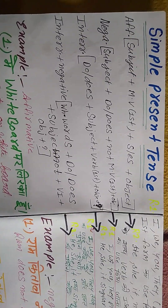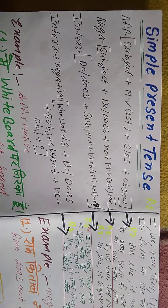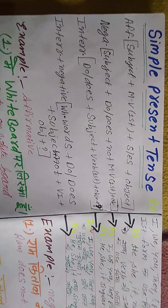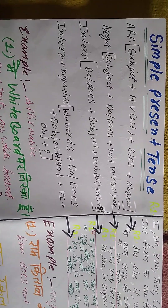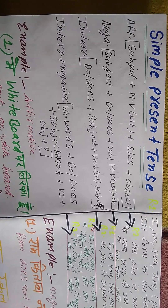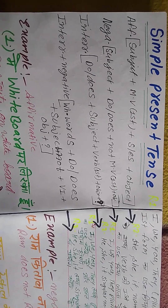Simple present tense का formula देखेंगे. Affirmative: Subject + main verb (base form) + s/es + object. Negative formula: Subject + does/do + not + main verb + object.